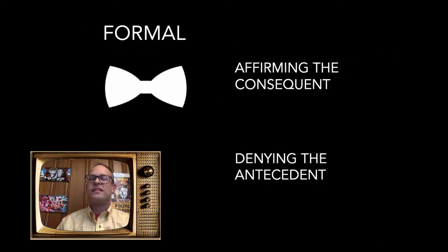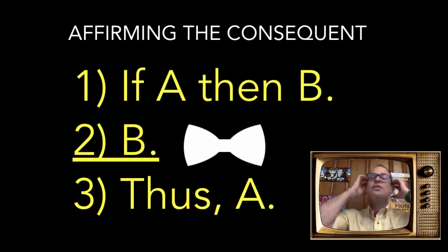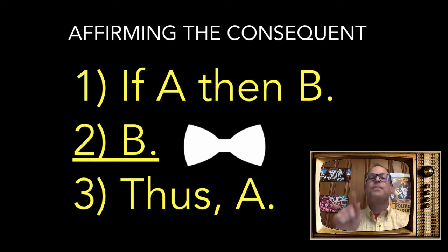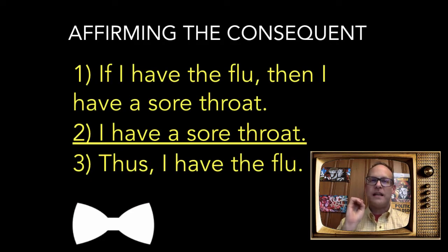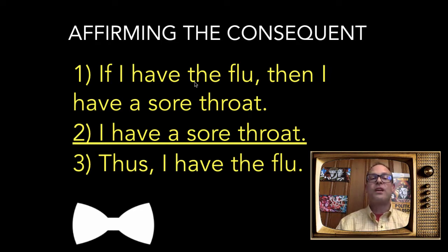For formal fallacies, we'll cover two: affirming the consequent and denying the antecedent. Affirming the consequent looks like this: If A then B, B, thus A. In natural language: 'If I have the flu, then I have a sore throat. I have a sore throat, thus I have the flu.' But you might have a cold, not the flu. Affirming the consequent of a conditional isn't enough to give you the antecedent as the conclusion.